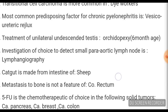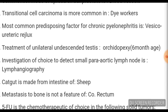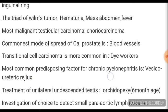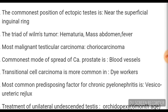Catgut is made from the intestine of sheep. Investigation of choice to detect small para-aortic lymph nodes is lymphangiography. Treatment of unilateral undescended testes is orchidopexy. The most common predisposing factor for chronic pyelonephritis is vesico-ureteric reflux. Transitional cell carcinoma is most common in dye workers.